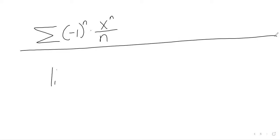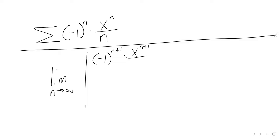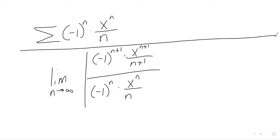So we're taking the limit as n goes to infinity. These never look very nice to start with — we've got that big fraction, and then we've got another fraction in the denominator. So we've got one fraction divided by another fraction, and we've got to simplify this thing.